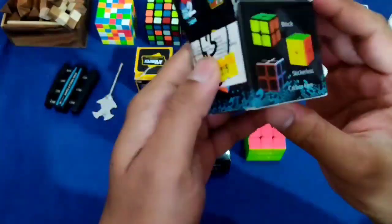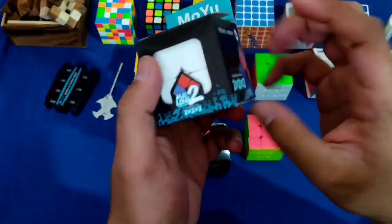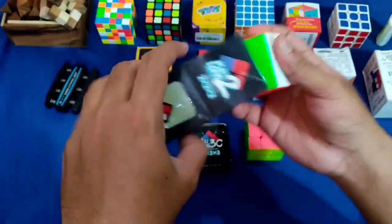You can see here, this is also available in black, stickerless, and carbon fiber. And here, Meilong 2x2 is written. Now let's talk about the specificity of the cube.